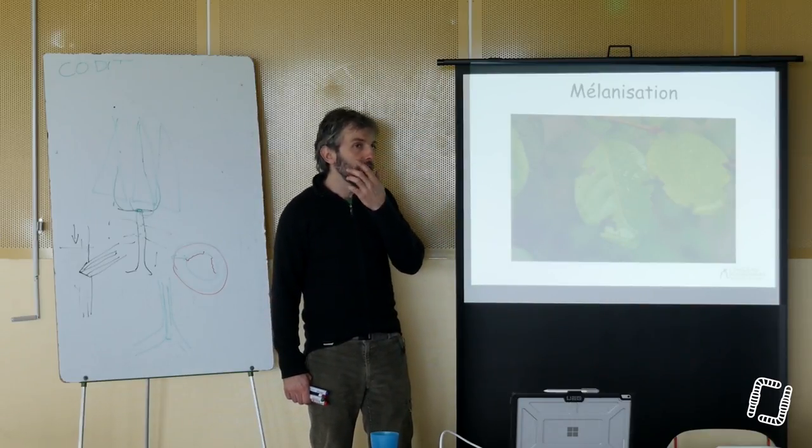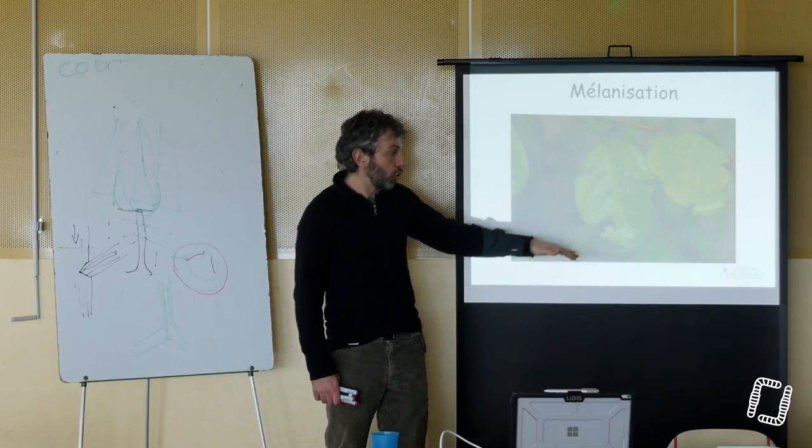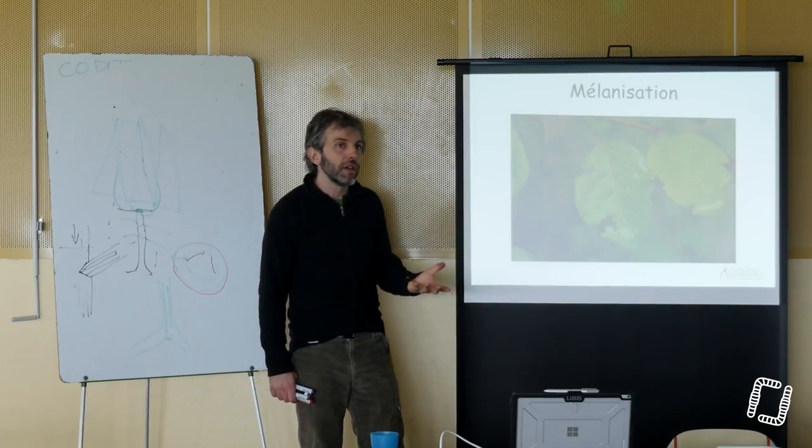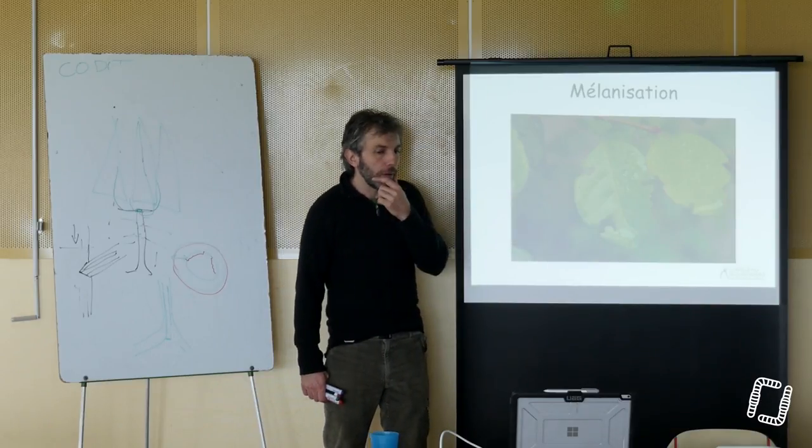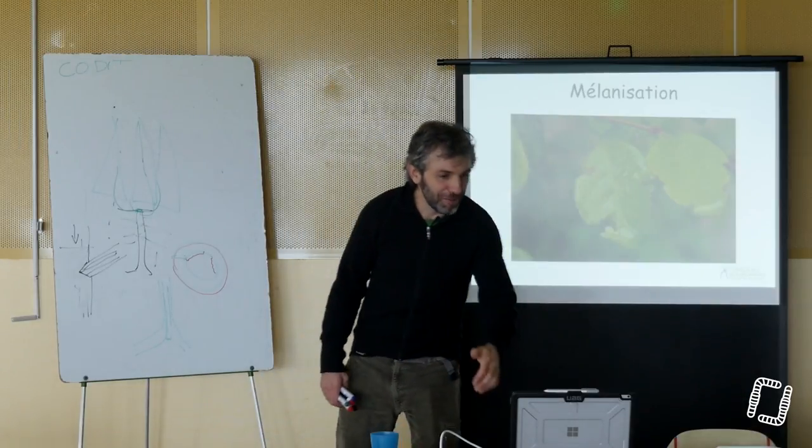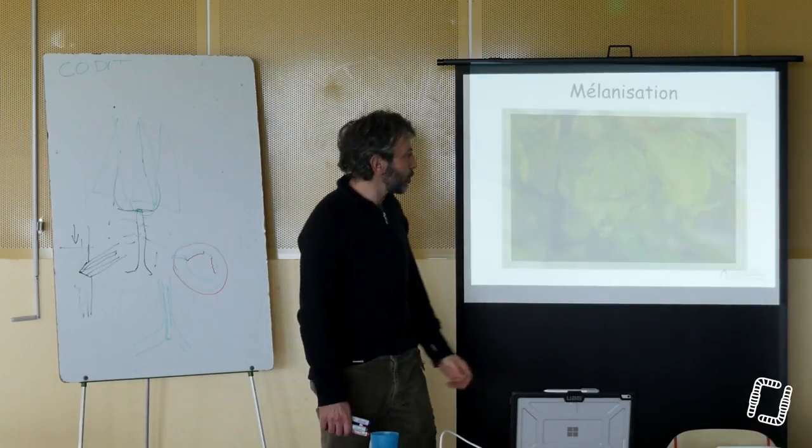Cette mélanine ferme la feuille et permet à la feuille de redevenir un peu plus étanche et de ne pas perdre de l'eau de manière inconsidérée. Et aussi, de devenir petit à petit immangeable pour les éventuels insectes.